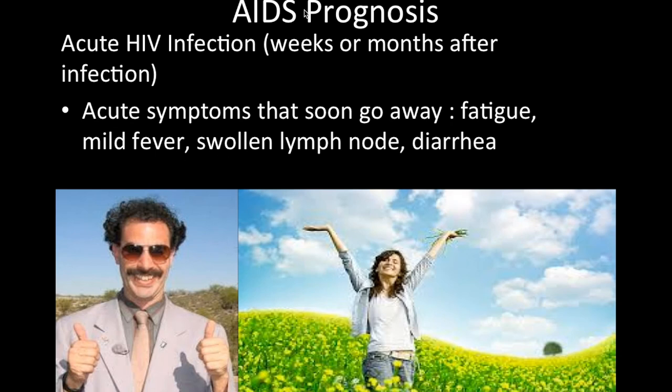Regarding AIDS prognosis: initially after infection, you won't see symptoms until about a week or a month later. These are very acute symptoms — they come and go — and include fatigue, mild fever, swollen lymph nodes, and diarrhea. They eventually go away and you return to feeling normal.